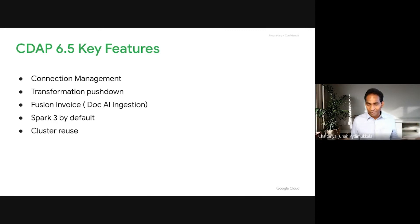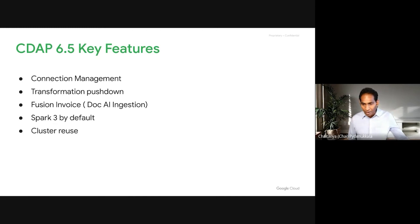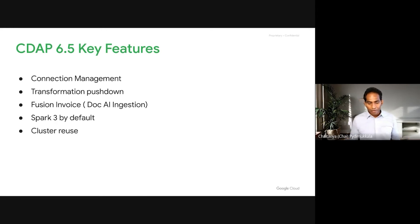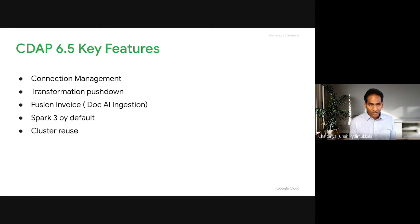We have made Spark 3 the default. Cluster reuse is something very important — today, when you run workloads on Dataproc using CDAP on Google Cloud, there is time spent bringing up the cluster. For smaller jobs you want to run in 30 to 40 seconds, unfortunately the cluster startup and teardown time takes that away. We have added a preview capability for cluster reuse for smaller jobs, and this is also available on CDAP if you are using Dataproc.